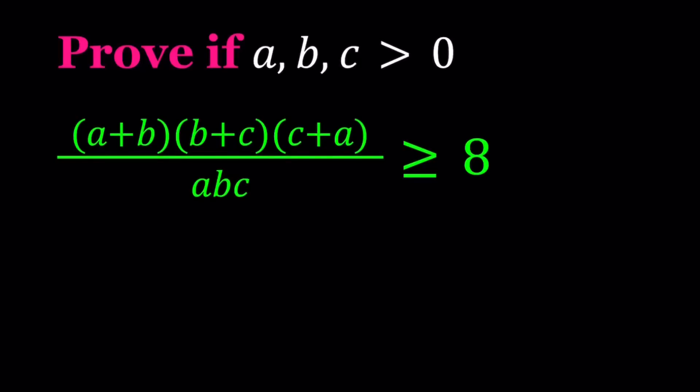Hello everyone. In this video, we're going to be proving an inequality for positive real numbers. A, B, C are positive reals, and we are supposed to prove that (A plus B) times (B plus C) times (C plus A), divided by ABC, is greater than or equal to 8.